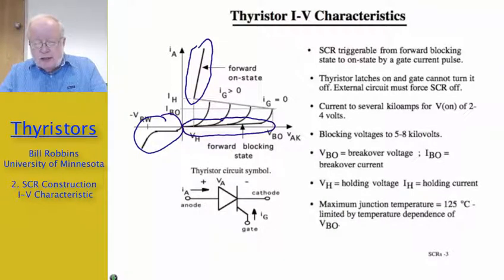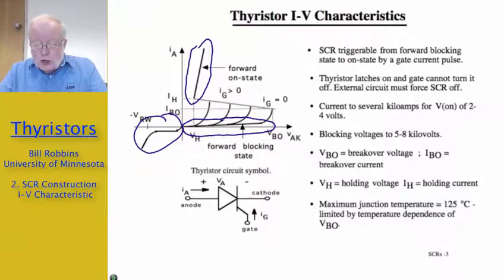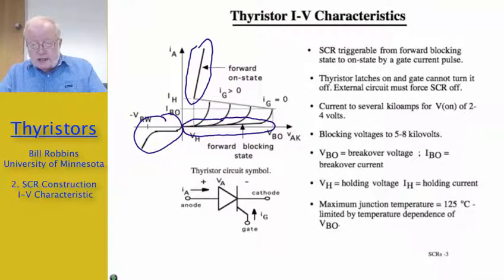The SCR can be triggered from the forward blocking state to the on state by means of a gate current pulse. But once the device is on, we can't turn it off by means of gate control. The external circuit must force the SCR off, which means the external applied voltage must make the anode negative and the cathode positive in order to turn off the thyristor. Current levels can range anywhere from a few tens of amps to several thousand amps. Even at several thousand amps, the on-state voltage will be on the order of two to four or five volts. Blocking voltages are on the order of five to eight kilovolts, and in some cases even higher.